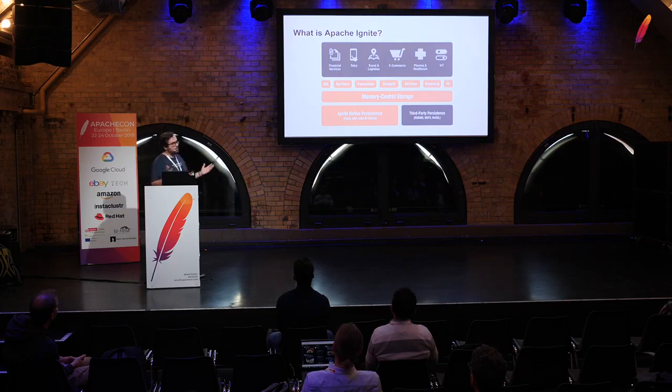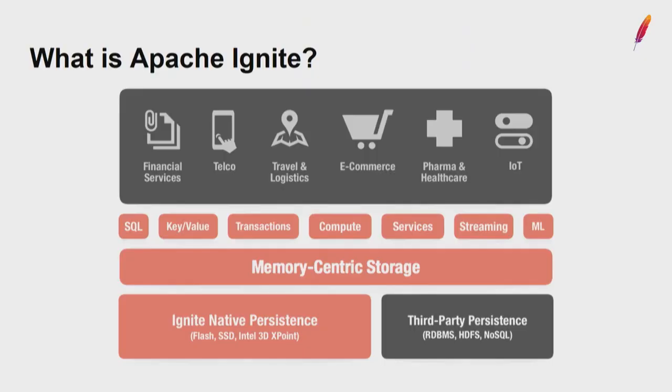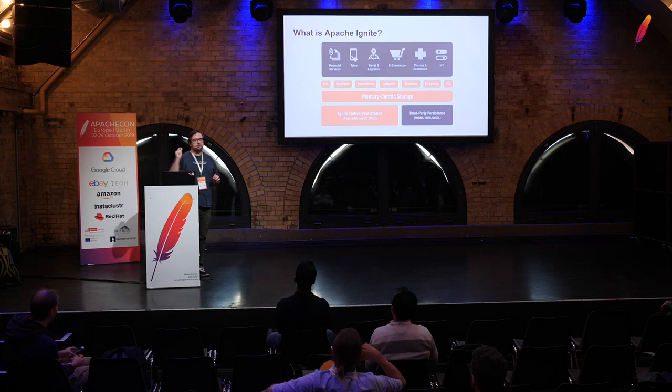I will say some words about what Apache Ignite is, because not so many users are here. First of all, it's kind of an in-memory database. It has many features for persisting to disk and supporting cache operations. For many use cases in production, it's an in-memory database. It fully supports ACID transactions and has distributed SQL. Two years ago we started a special ML module in the Apache Ignite ecosystem.